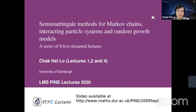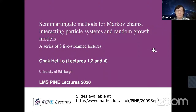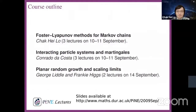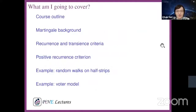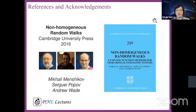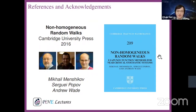Today I will continue to present the semi-martingale methods for Markov chains, focusing on an example of the voter model, which is a type of interacting particle system. Most of the material in this series is from the book Non-Homogeneous Random Walk by three authors. It's a very good book and focuses on the Lyapunov functions method, which is the focus of these three lectures.